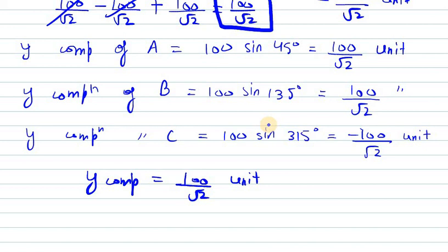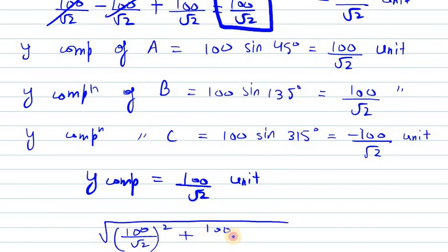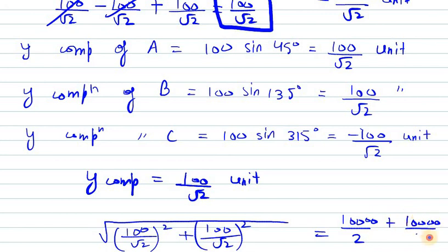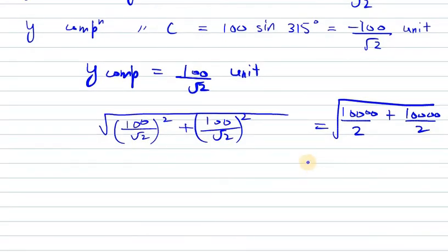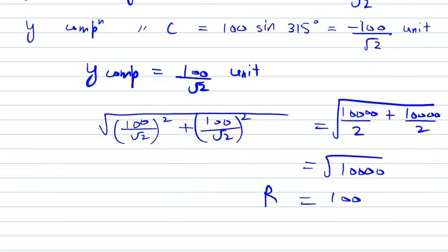We have the resultant of both x and y. The total resultant magnitude is √[(100/√2)² + (100/√2)²], which gives √[10,000/2 + 10,000/2] = √10,000 = 100 units.